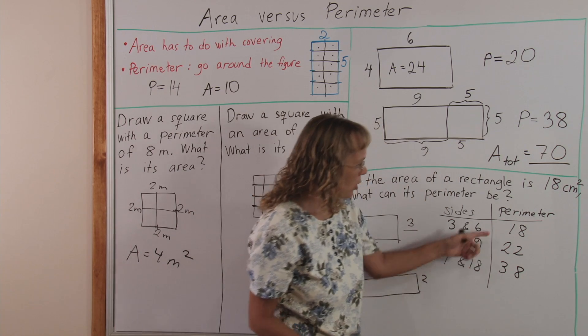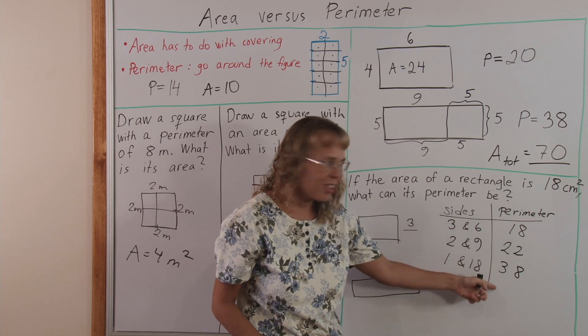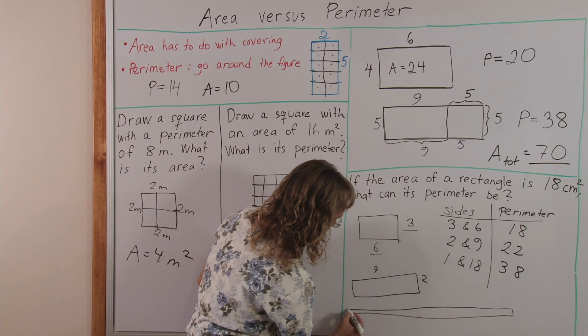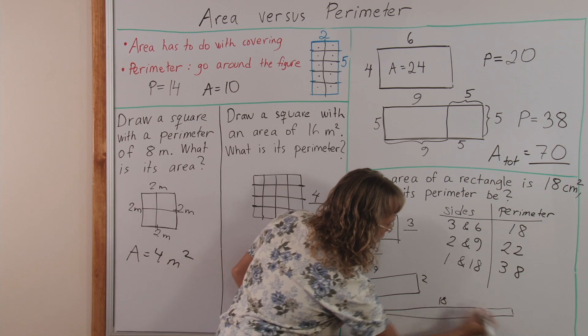Okay, you can see that the perimeter gets longer and longer, as rectangles would get slimmer and slimmer, if this was the, you know, eighteen and one.